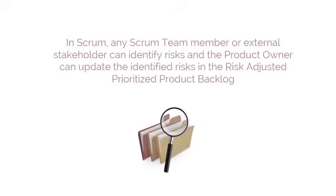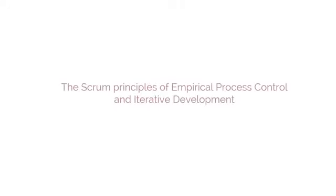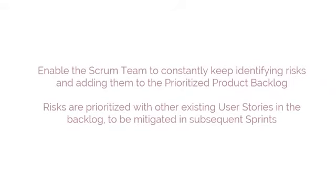In Scrum, any Scrum team member or external stakeholder can identify risks, and the product owner can update the identified risks in the risk-adjusted prioritized product backlog. The Scrum principles of empirical process control and iterative development enable the Scrum team to constantly keep identifying risks and adding them to the prioritized product backlog, where such risks are prioritized with other existing user stories to be mitigated in subsequent sprints.